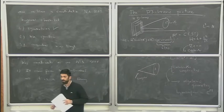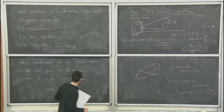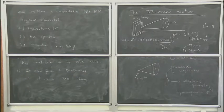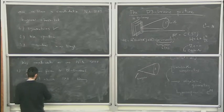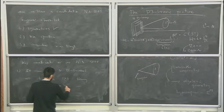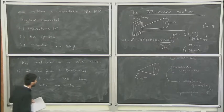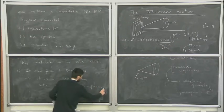We know the theory must be conformal. Can it be pure super Yang-Mills? No, because that's not a conformal field theory. Can it be N equal four? No, because it has N equal one. So it must be something in between — a Yang-Mills theory but presumably with some matter to make it conformal. This matter transforms in representations of the gauge group G.